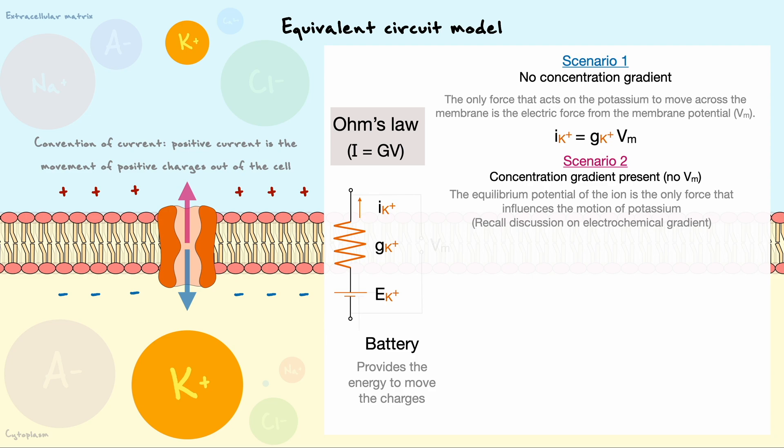Here again, we can use Ohm's law to describe the current through the channel, but to make sure the signs align with each other, the negative sign on the right side must be present because the equilibrium potential of potassium is negative, and we expect a positive current.